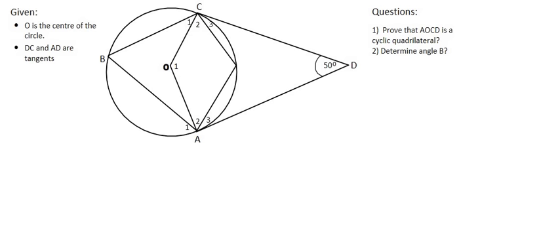In this question we are told that O is the center of the circle and DC and AD are tangents. Always look out for that in a test because sometimes a line may look like a tangent but always make sure that they have told you that it is a tangent in the description of the question.